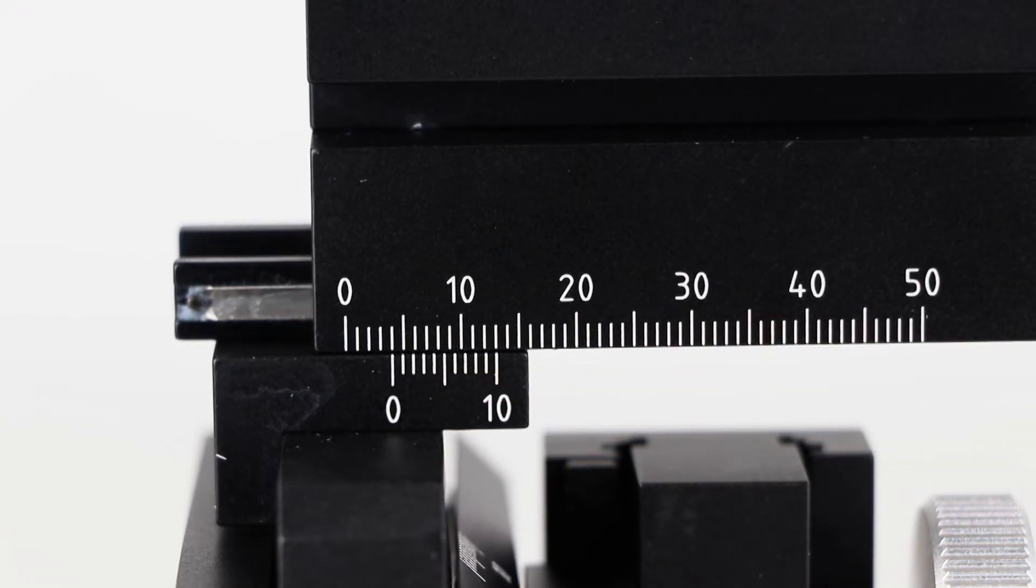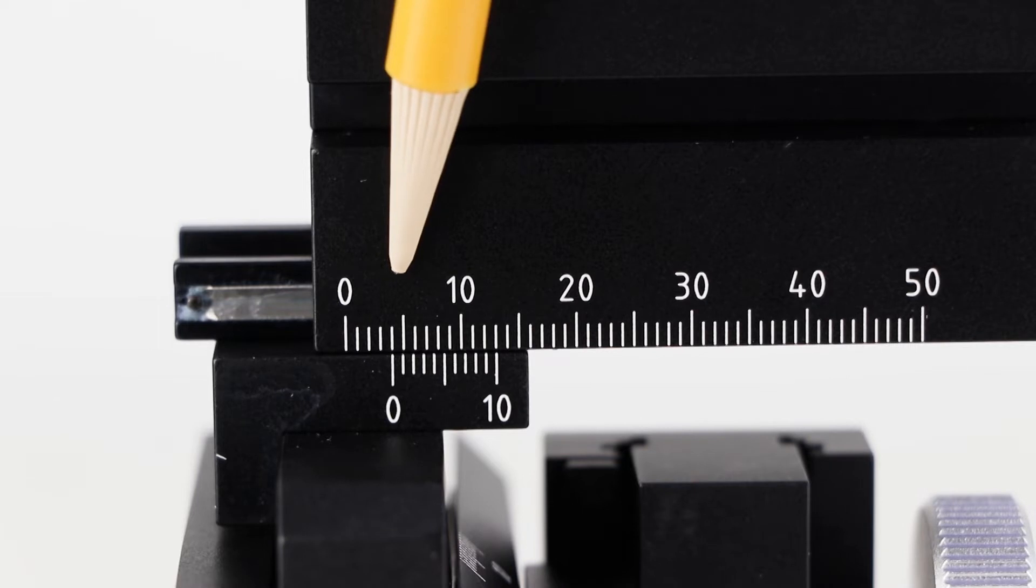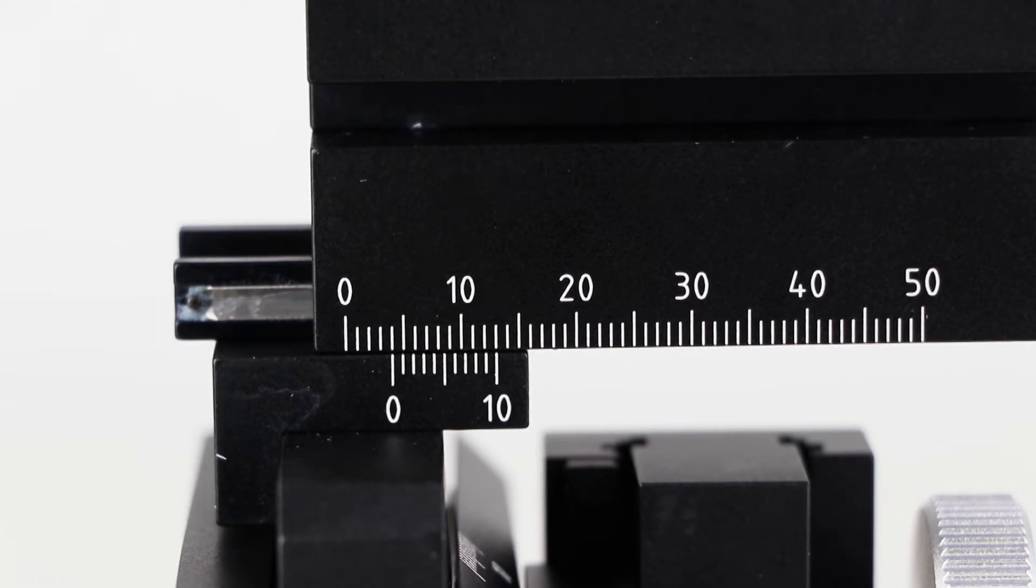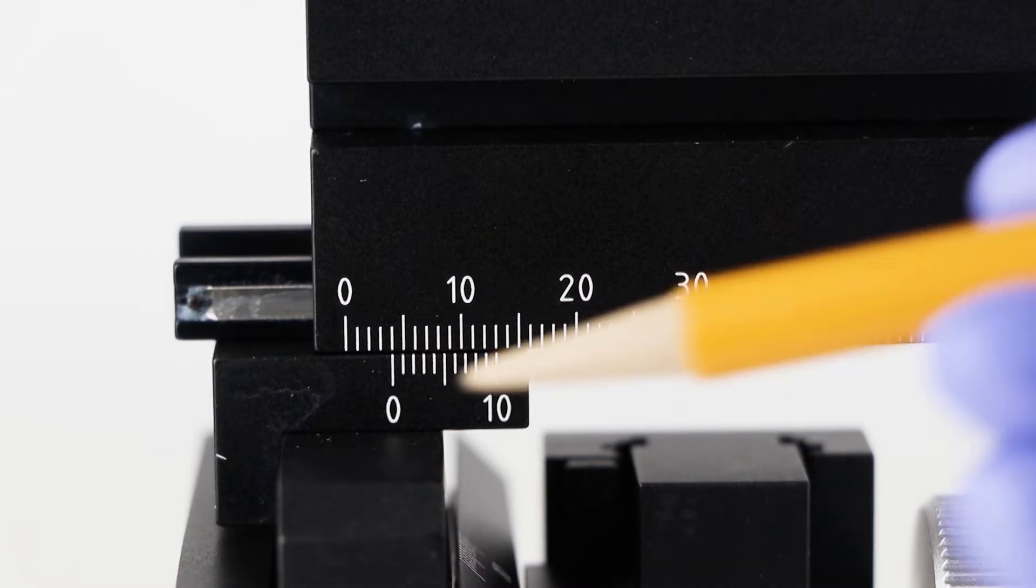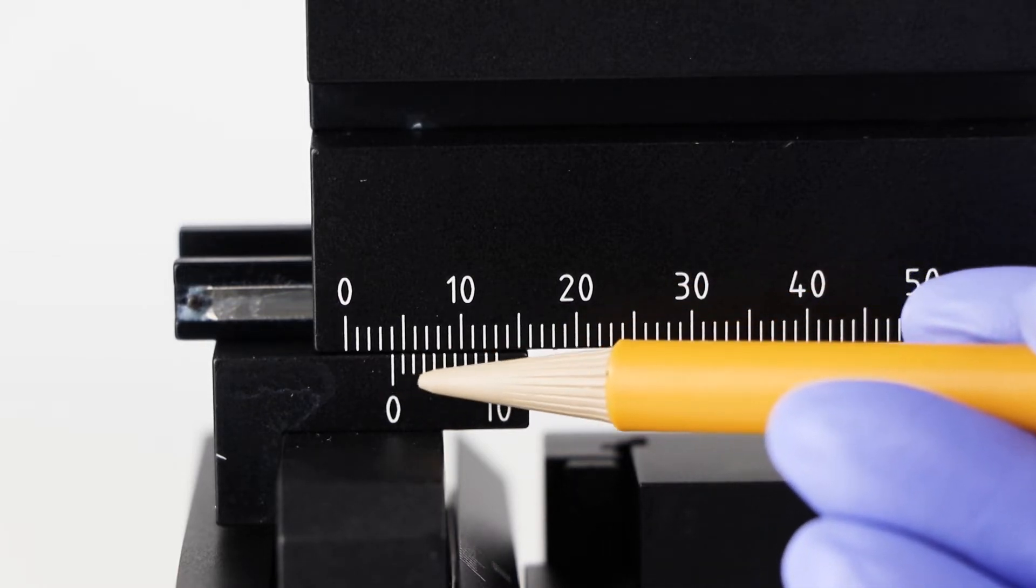To read the Vernier scale, you first read the main scale. Look for the last whole increment visible before the zero mark, then read the secondary scale measurement. Choose the division that lines up best with a mark on the main scale, and then add the two measurements together.